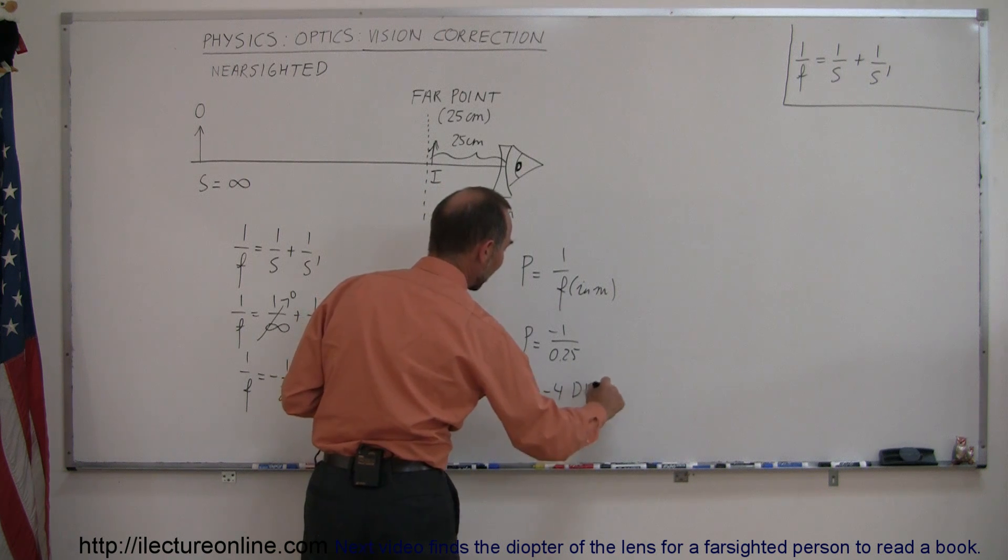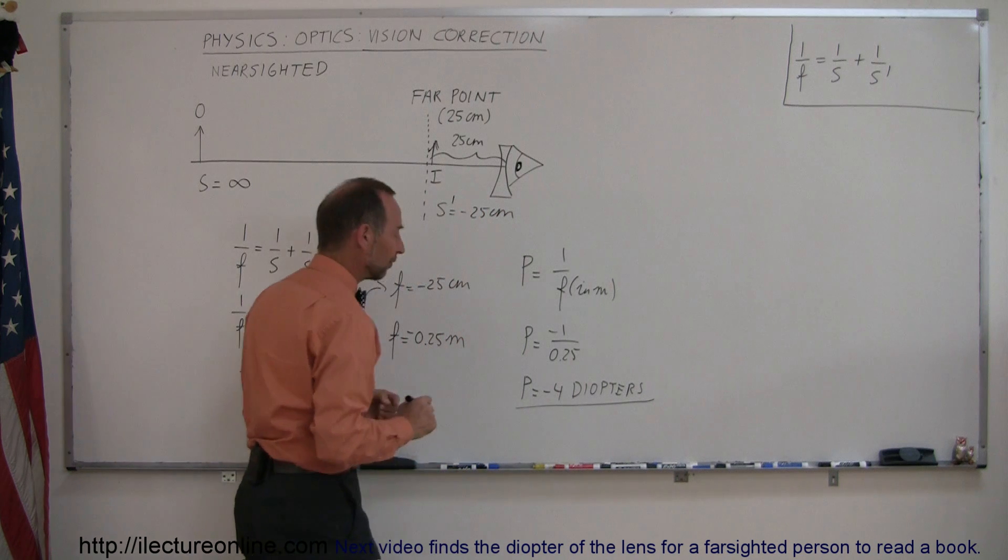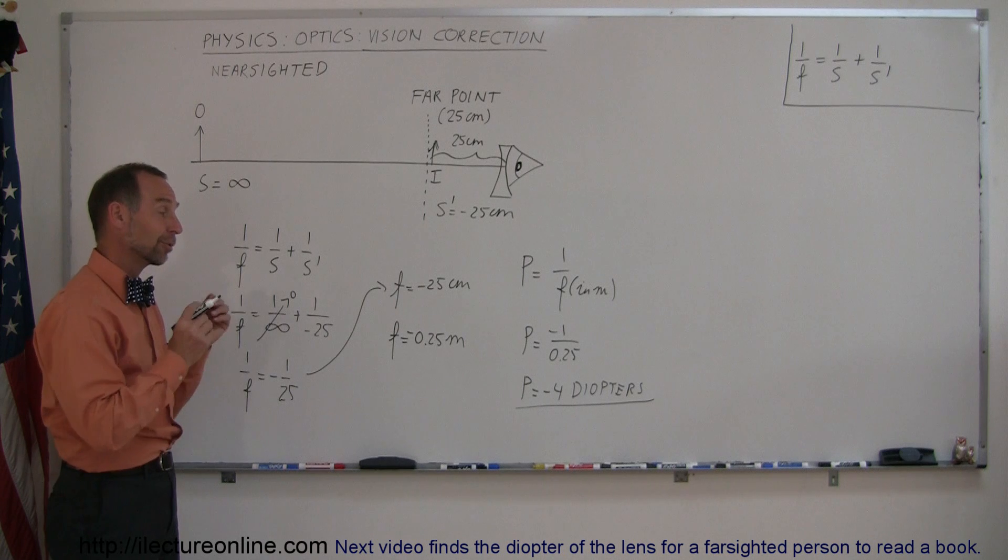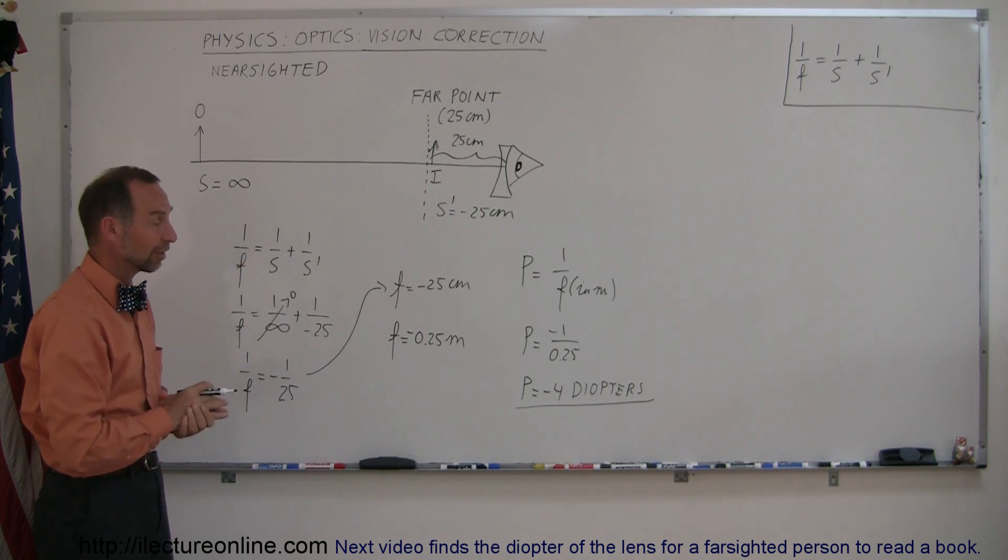And the units for power is diopters. So that means you need to go to the store and find yourself a pair of glasses that are indicated to be minus 4 diopters. And then if you put those on and you have a far point that's 25 centimeters, you will see things clearly.